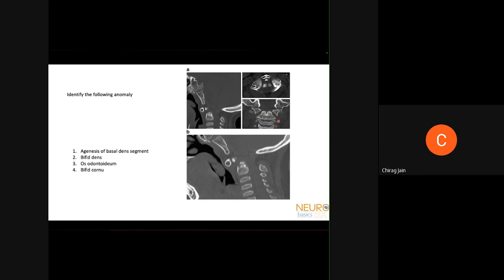The answer is bifid dens. A dens bicornis would have only the tip of the dens bifid. This is not an os odontoideum because of the structure visible here, and looking closely it is bifid throughout. When there is a midline fusion problem the central pillar will be hypoplastic, and a bifid dens with a very hypoplastic central pillar is associated with instability.